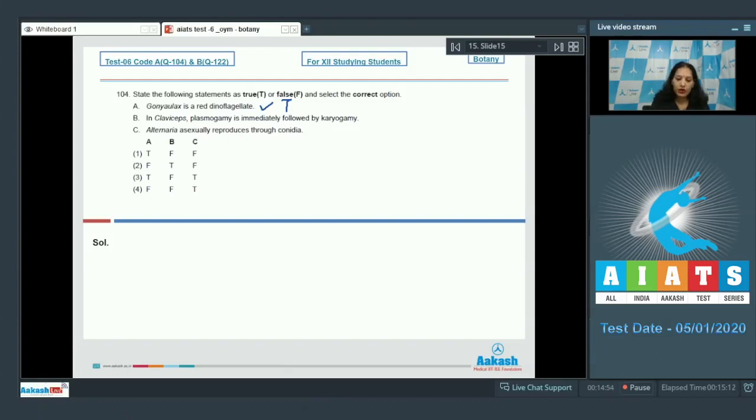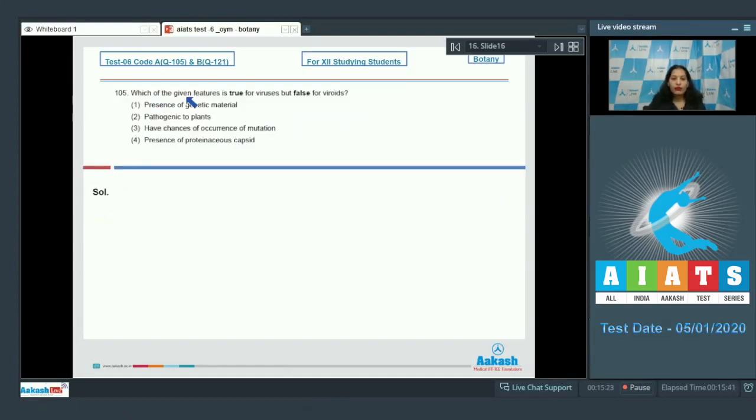C: Alternaria asexually reproduces through conidia. Yes, Alternaria is a member of deuteromycetes and it asexually reproduces through conidia. It is true. So by analyzing the options we can say the correct option for the given question is option number three.